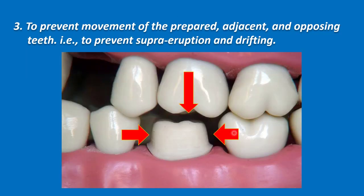Third, to prevent movement of the prepared tooth, adjacent teeth, and the opposing tooth. After preparation of the tooth, there will be space which was occupied by the enamel. It is a normal phenomenon for the adjacent teeth and the opposing tooth to move to close these spaces, so supra-eruption of the opposing tooth may occur and drifting of the adjacent teeth.